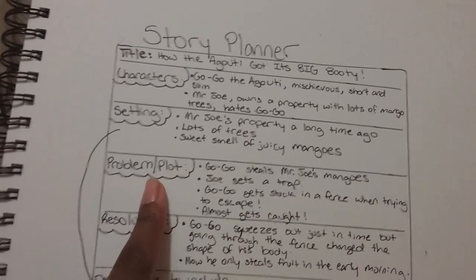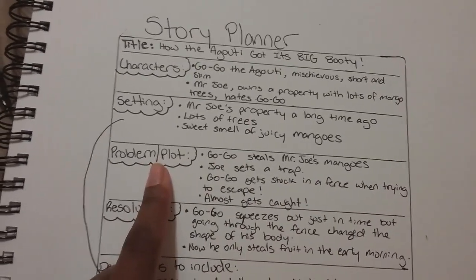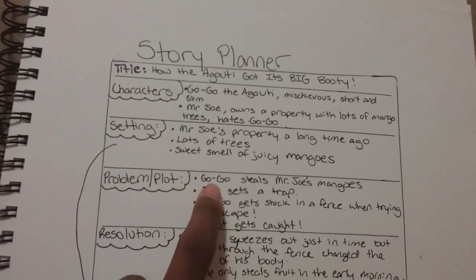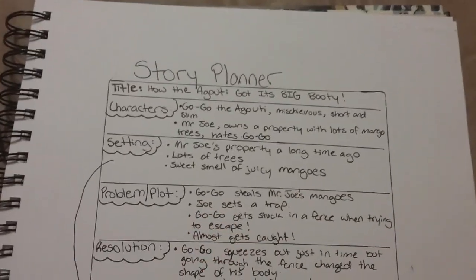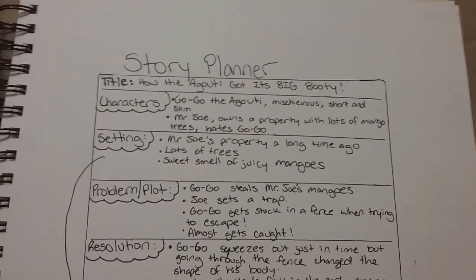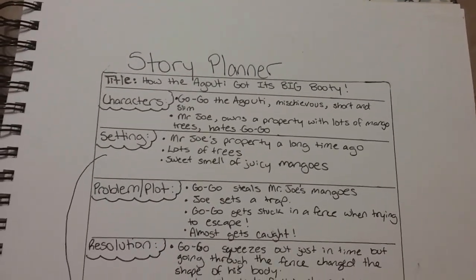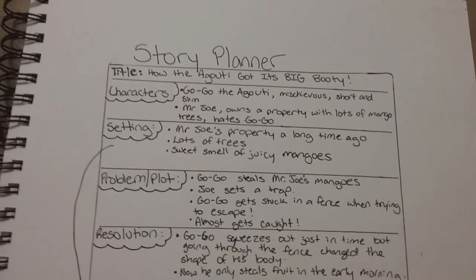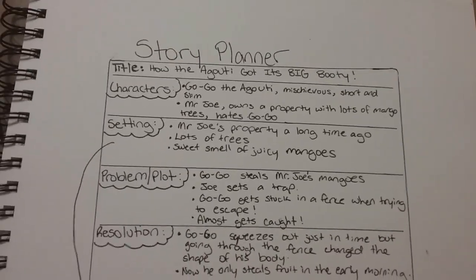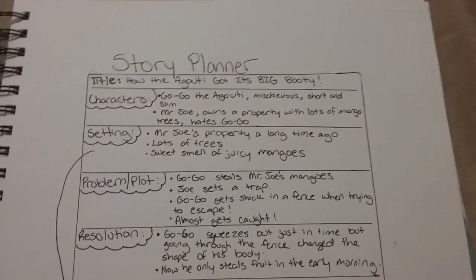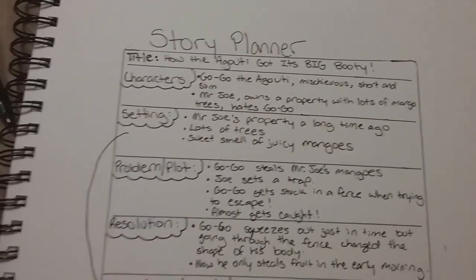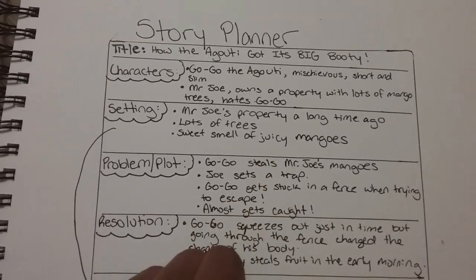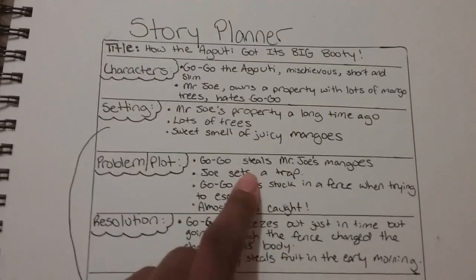Now after the setting, I moved on to the problem and the plot — the events of the story. It starts with Gogo stealing mangoes from Mr. Joe. The reason Gogo is called Gogo is because whenever he steals mangoes, other animals will warn him when Mr. Joe is coming — they'll go "go, go" and tell him to run away. So he's gotten so used to hearing that, that that's just the name he goes by. Mr. Joe then gets tired of Gogo stealing all his mangoes, so he sets a trap. That's the next big event.